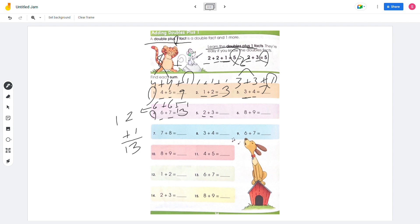And 2 plus 3 is 5. 8 plus 9 is 17. And number 7, we have 7 plus 8, which is 15. 3 plus 4 is 7, and 6 plus 7 is 9. So if you know the double facts, this will be easier.